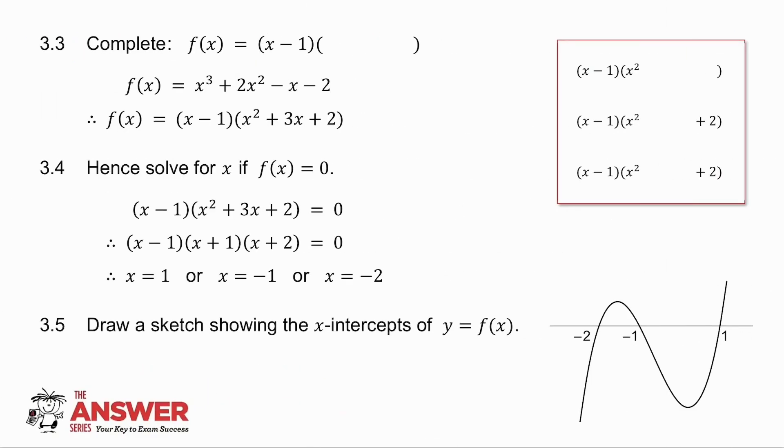3.3 asks you to divide x minus 1 into f of x. In other words, x minus 1 times what will give you f of x. I've got an x cubed. Well, x times what gives me x cubed. It's x squared. On the end, I have minus 2. Minus 1 times what will give me minus 2. It's plus 2.